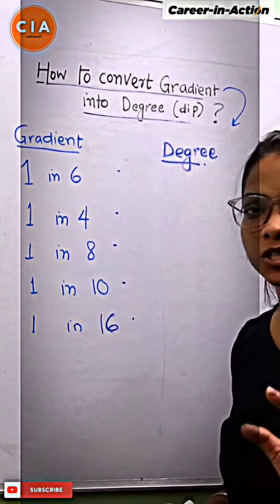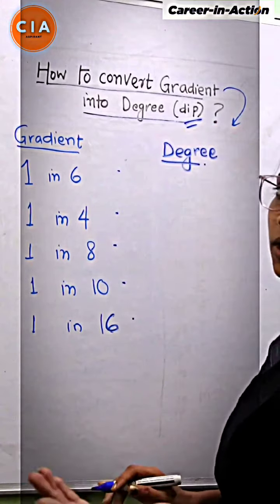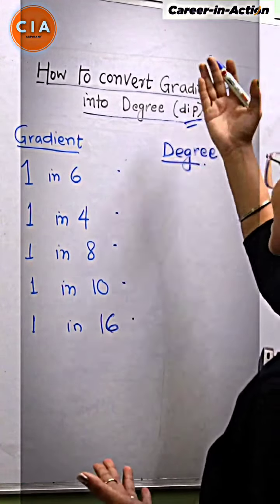This is the portion you will get in the geological part. So, dip strike, you will get the portion of gradient to degree.